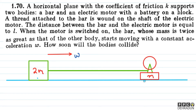So, I will give a mass of m and 2m. The acceleration given is W. As written here, when the motor is switched on, the bar — whose mass is twice as great as that of the other body — starts moving with a constant acceleration W. We are asked how soon after this will the two bodies collide with each other.